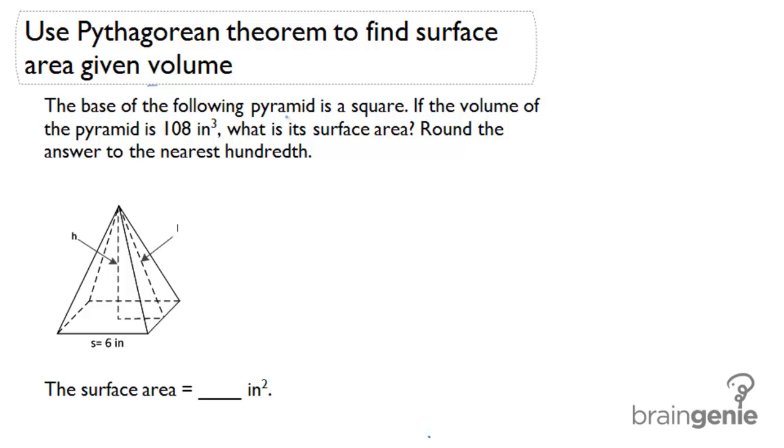Find the surface area given the volume. Let's read through this problem and decide what the best process is. The base of the following pyramid is a square. If the volume of the pyramid is 108 inches cubed, what is its surface area? Round the answer to the nearest hundredth.